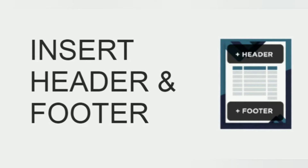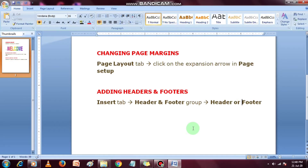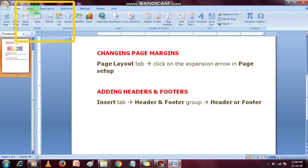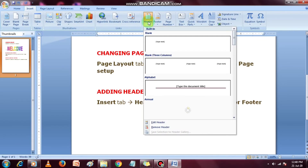Now let us see how to insert header and footer in MS Word. Header and footer allow you to add additional information like dates, file names, and page numbers at the top or bottom of your document. The basic steps to set up a header and footer are as follows. Select the Insert tab. Locate the Header and Footer group — it shows Header and Footer commands. As required, click either the Header or Footer command. It displays a list of built-in header or footer options.